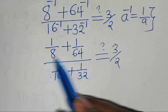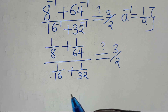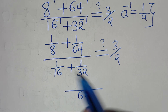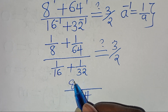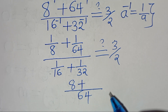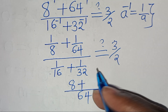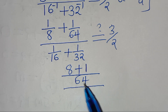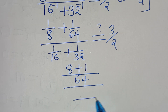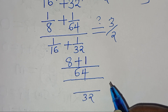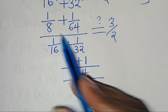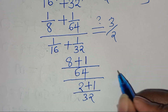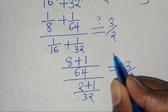Given that a to the power of minus 1 equals 1 over a, we have 1 over 8 plus 1 over 64, divided by 1 over 16 plus 1 over 32. In the numerator, the LCM is 64, so 64 divided by 8 is 8, giving 8 times 1 which is 8, plus 1 over 64 times 64 which is 1. In the denominator, the LCM is 32, so 32 divided by 16 is 2, giving 2, plus 1, which is 3.